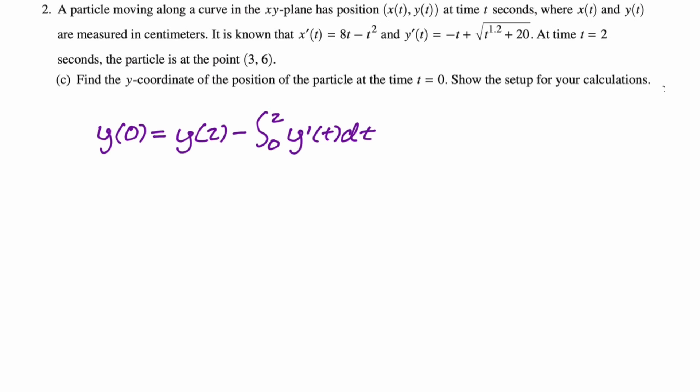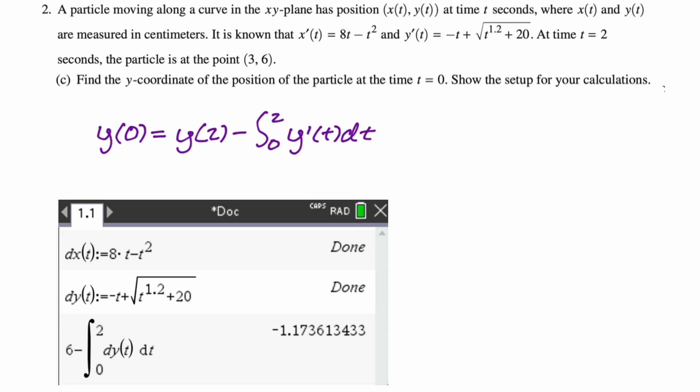I'm going to jump on the calculator for this. So y(0) is y(2), which was 6, minus the integral from 0 to 2 of—I always store my function's derivatives as d, whatever the name of the function is, so dy(t) in this case. And I got -1.174. So y(0) is approximately -1.174.